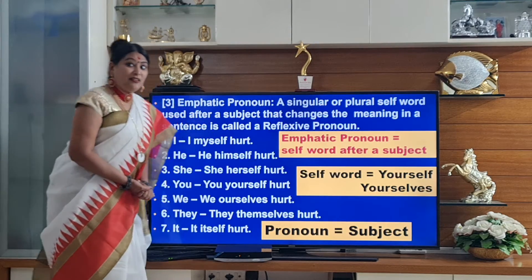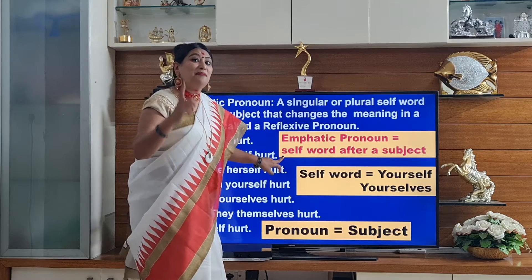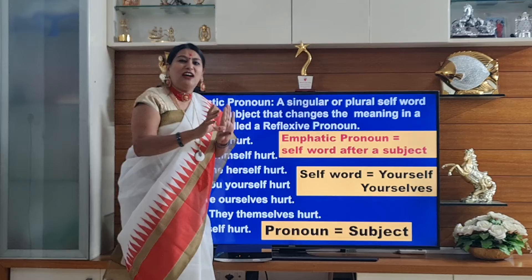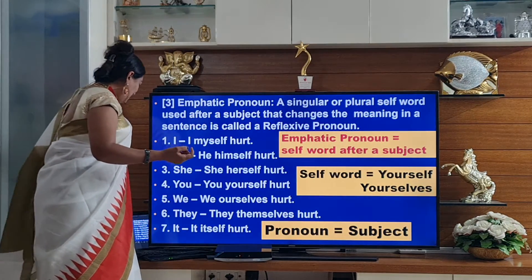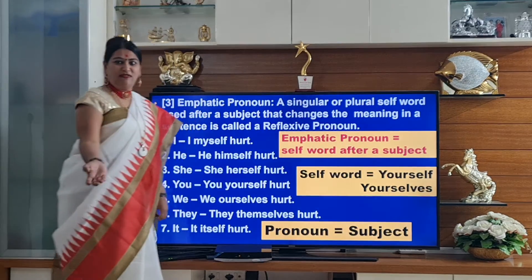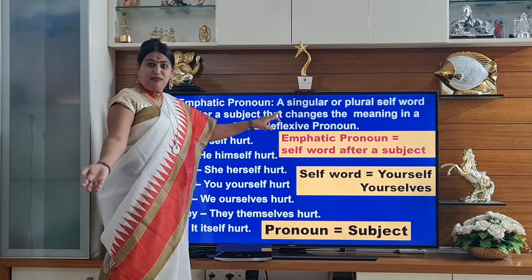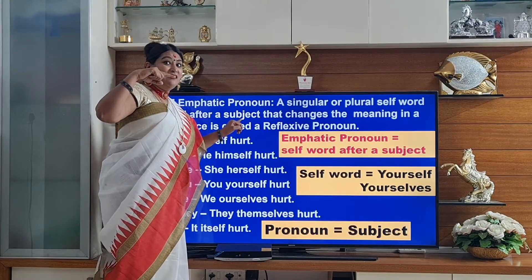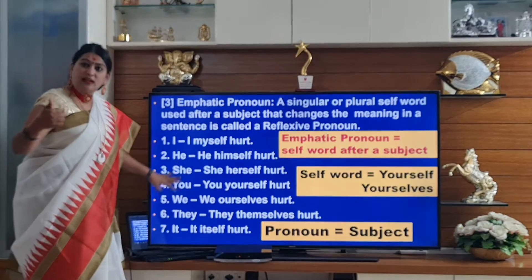Now let's see emphatic pronoun. Here, only one thing you need to remember: the self-word should follow immediately after the subject — not after the action. What is the subject? Personal pronoun — I, he, she, you, they. A singular or plural self-word used after the subject is called an emphatic pronoun. When it was reflexive, it was after the verb. Now it's after the subject.